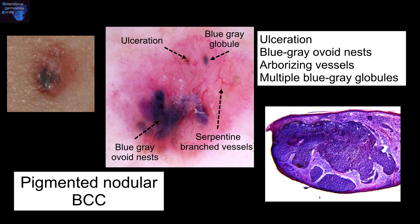This is another example showing a pigmented nodular basal cell carcinoma with a blue-gray globule, an ulceration, serpentine branch vessels, and a blue-gray ovoid nest.